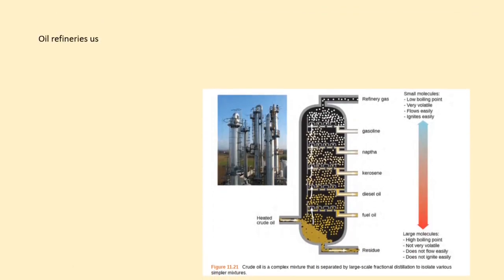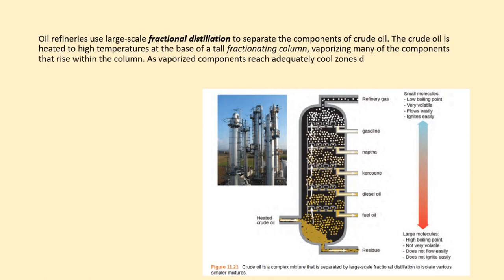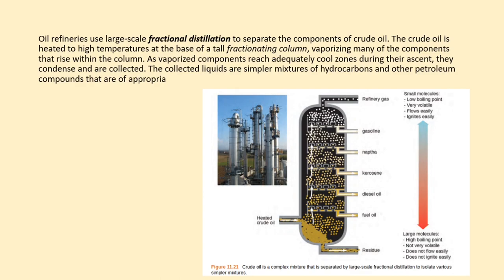Oil refineries use large-scale fractional distillation to separate the components of crude oil. The crude oil is heated to high temperatures at the base of a tall fractionating column, vaporizing many of the components that rise within the column. As vaporized components reach adequately cooled zones during their ascent, they condense and are collected. The collected liquids are simpler mixtures of hydrocarbons and other petroleum compounds that are of appropriate composition for various applications, e.g., diesel fuel, kerosene, gasoline, as depicted in Figure 11.21.